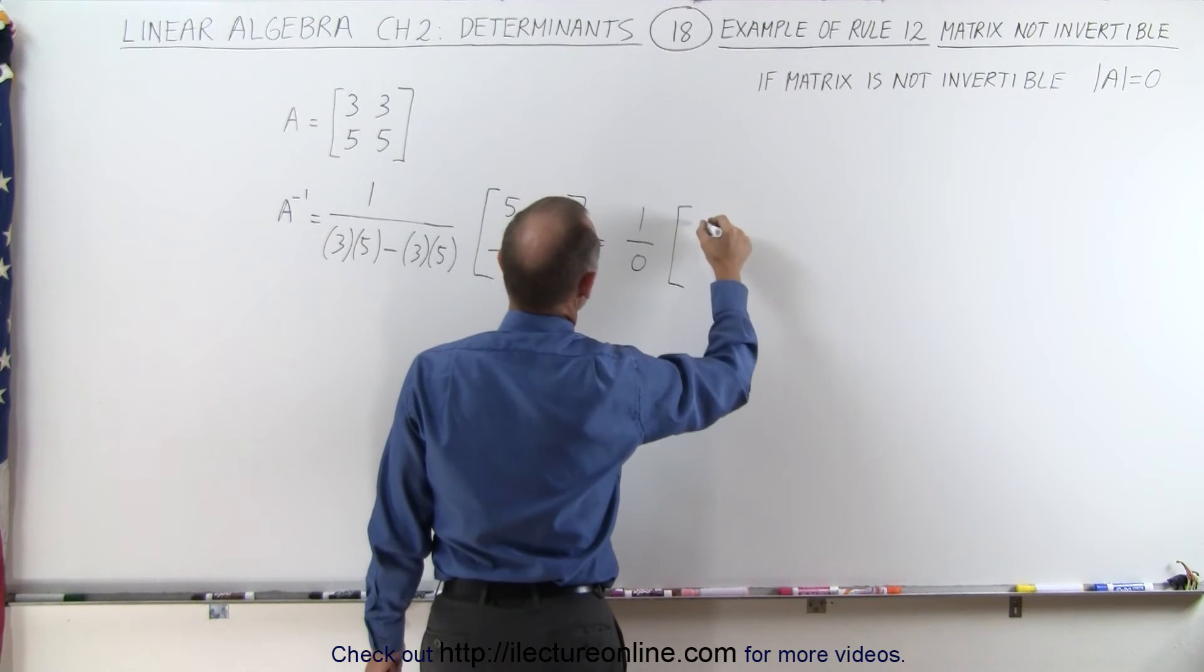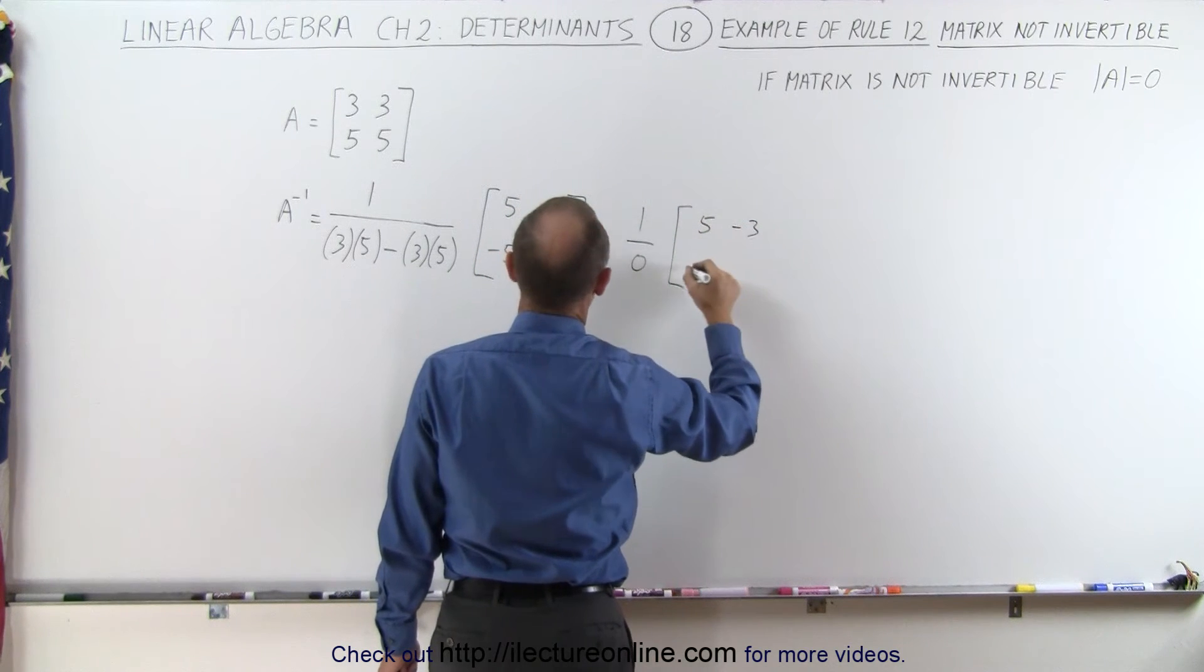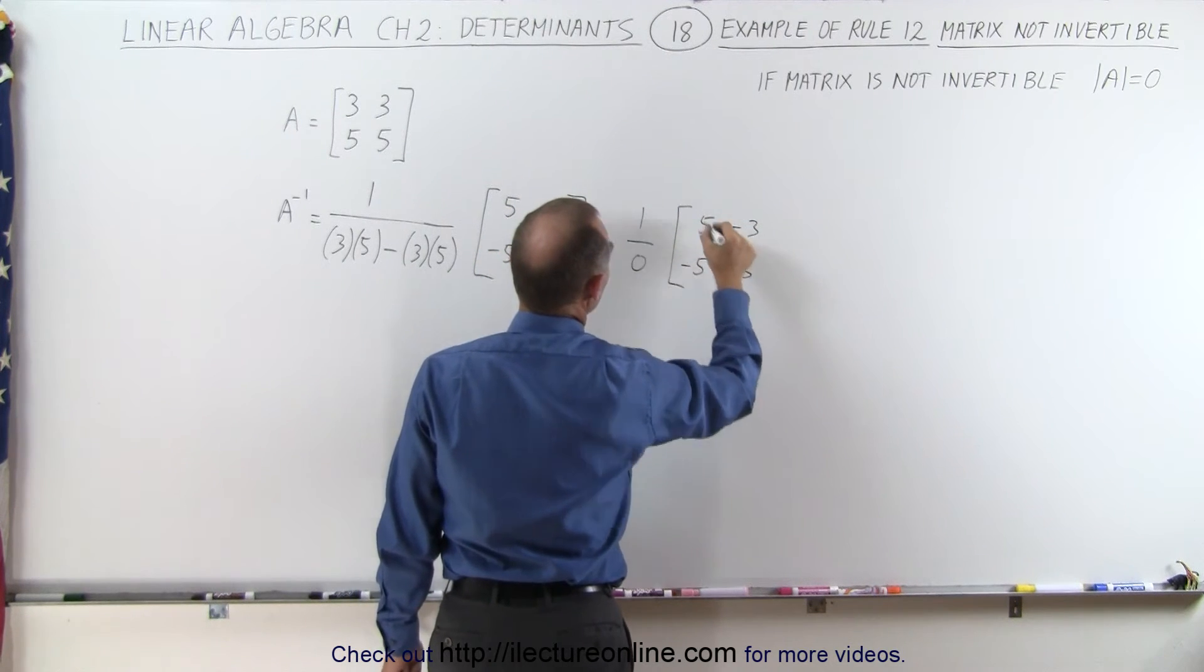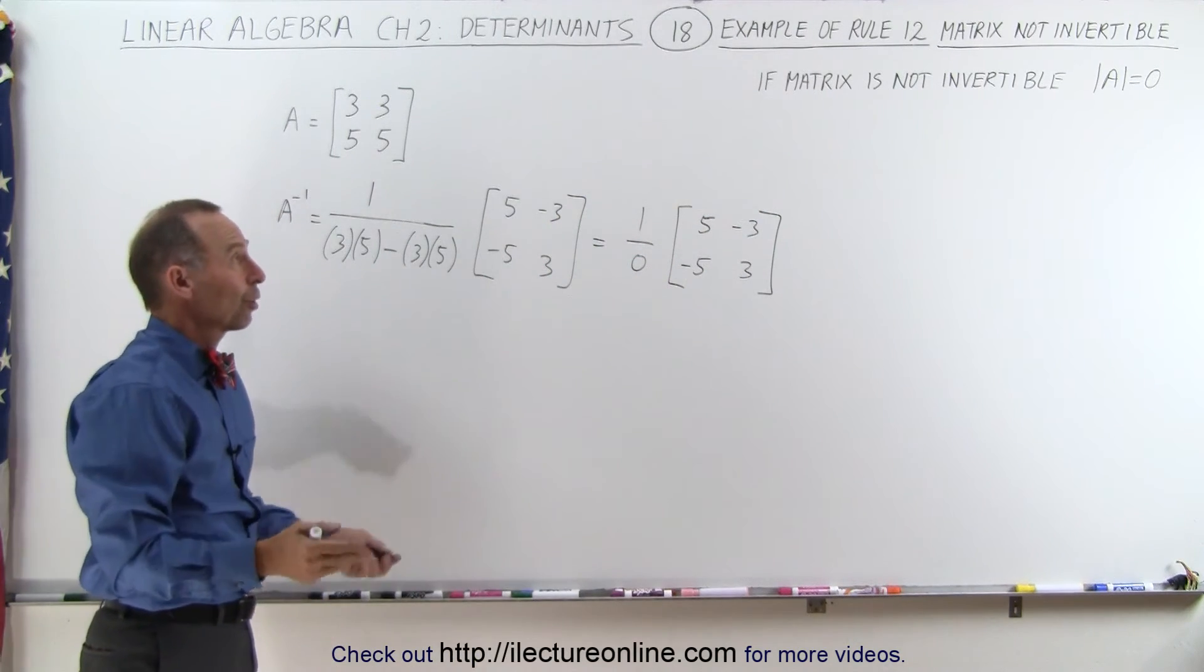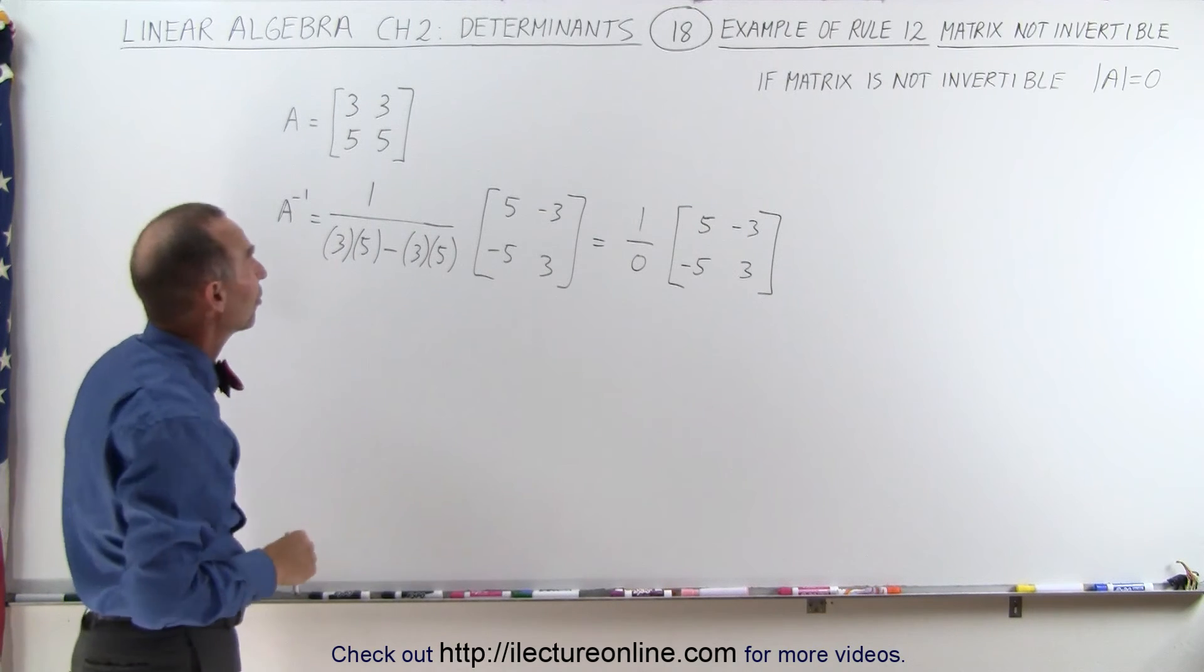It doesn't matter that this matrix is a 5, a minus 3, a minus 5, and a 3. It's still multiplied by an undefined number. Therefore there's no inverse to this matrix.